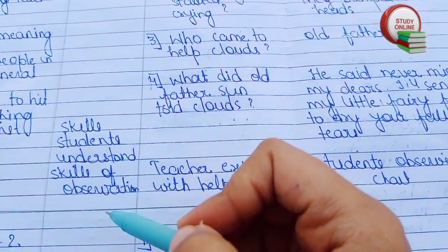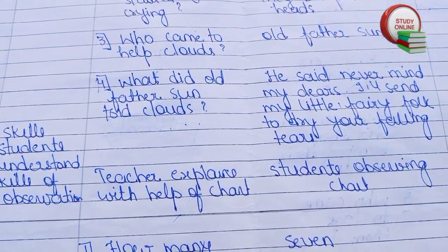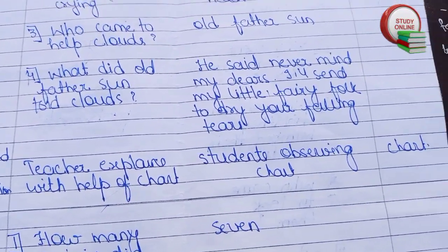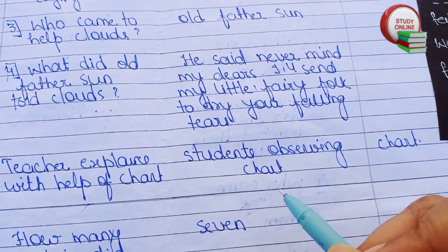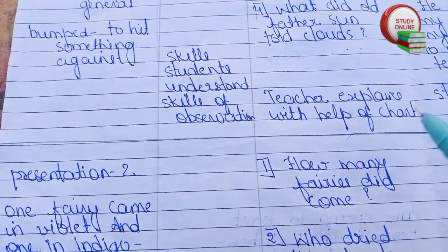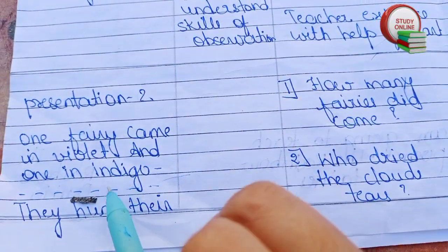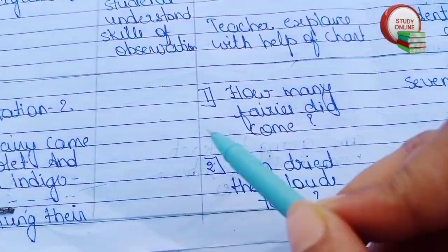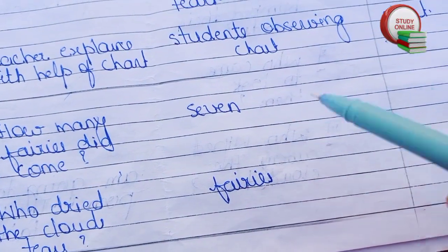For skills, the teacher explains with the help of a chart — the teacher explains everything using the chart and students observe the chart. For teaching aids, we write 'chart.' For Presentation 2, we repeat the same process — ask questions, provide expected answers, and show the blackboard work.